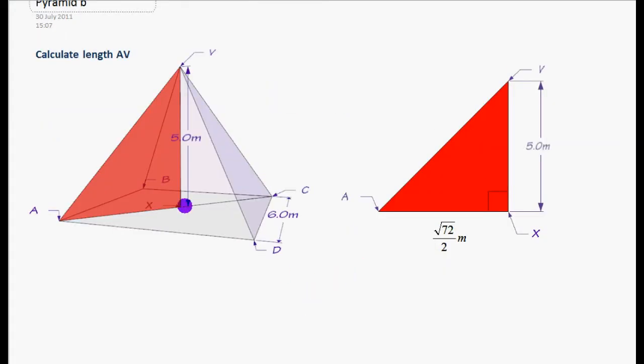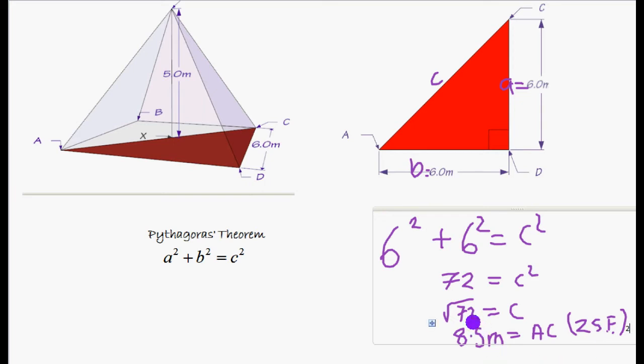So we want to find the length AV. We found AC in the last question. We found AC to be square root of 72. We rounded that to 8.5 to 2 significant figures. But we want to use the accurate value all the way through our question.